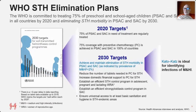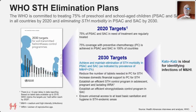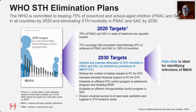The first goal is to achieve and maintain elimination of STH morbidity in preschool-age and school-age children, indicated by a prevalence of moderate to heavy intensity infections of less than 2%. The document also states that the Kato-Katz method is ideal for identifying those moderate and heavy intensity infections. So there is already a basis for new diagnostics in the 2030 targets.